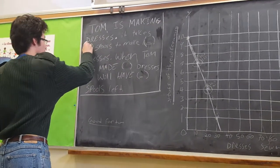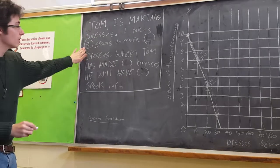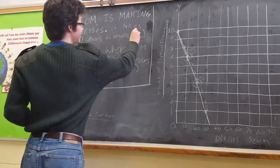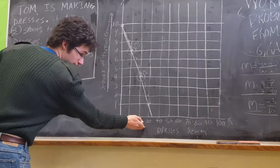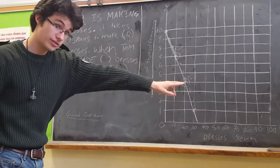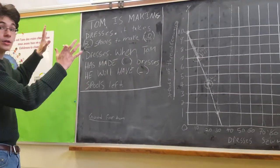So it takes 3 spools to make 10 dresses. Dresses is the x-axis. So of course, 10, which is the change in the x-axis, will go here. And now you have your slope.